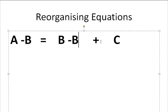and B minus B is zero, so we can get rid of all of that. And we can see that A minus B equals C, or that C equals A minus B.